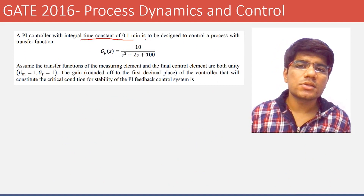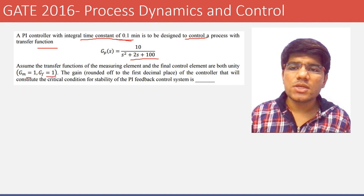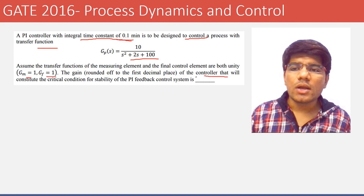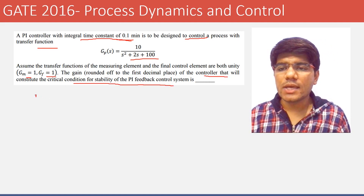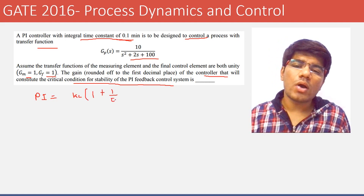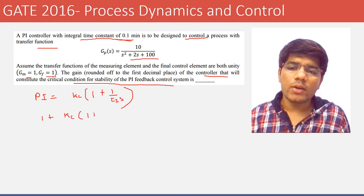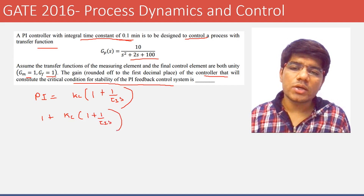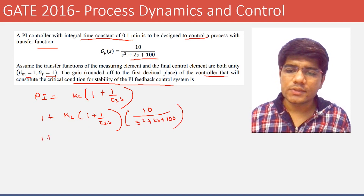The transfer function is given; Gm and Gf equal 1, and we need to find the controller gain Kc that constitutes the critical condition of stability for the PI feedback control system. The PI controller is Kc · [1 + 1/(τI · s)], with τI = 0.1. Multiplying by the process transfer function 10 / (s² + 2s + 100).